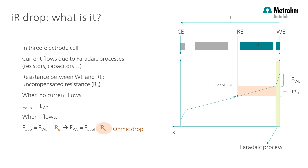It also depends on the temperature, the ion concentration, the distance, and the materials used in a setup. As soon as there is some current flowing, the presence of the electrolyte resistance, or uncompensated resistance — RU in this drawing — will induce a drop in potential which is related to the current flowing times the uncompensated resistance. So the potential at the working electrode is never exactly what you apply due to this ohmic drop.